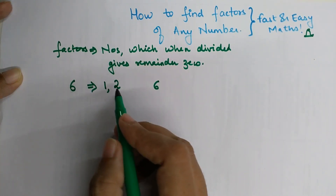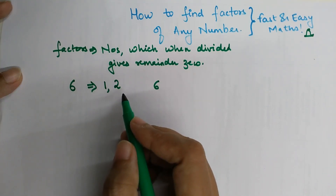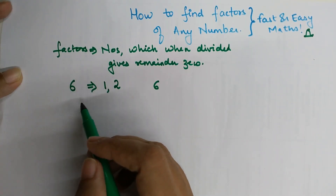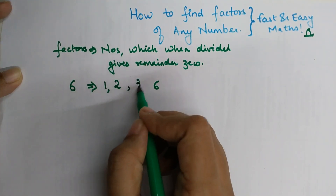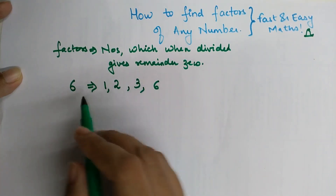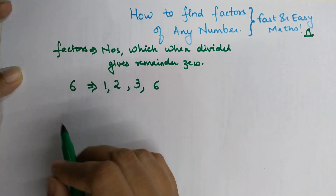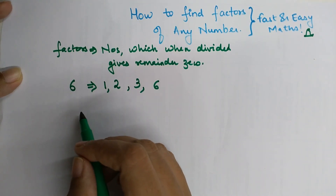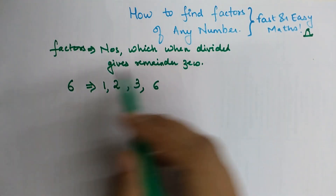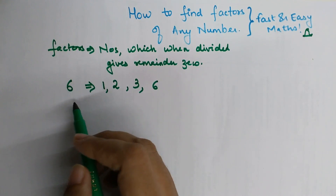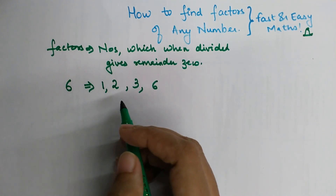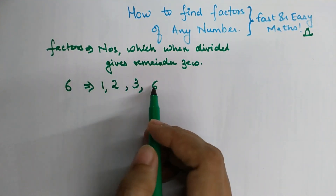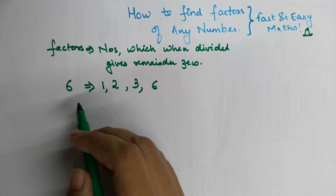The next number after 2 is 3. Does 3 divide 6? Yes, completely — 3 into 2 gets you 6. So 3 is also a factor. Checking 4: when you divide 6 by 4 you get a remainder of 2, so 4 is not a factor. Same for 5. So the factors of number 6 are 1, 2, 3, and 6.